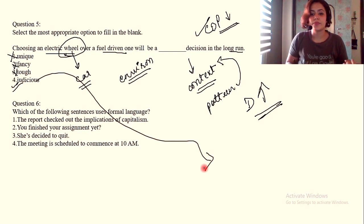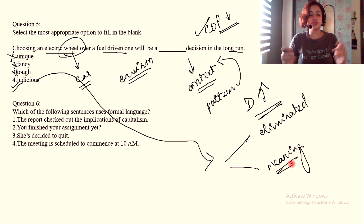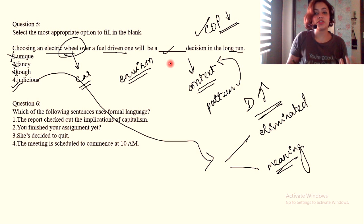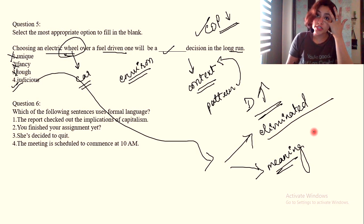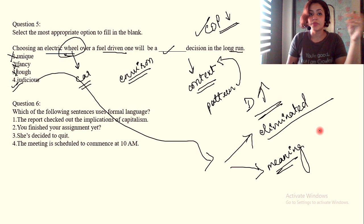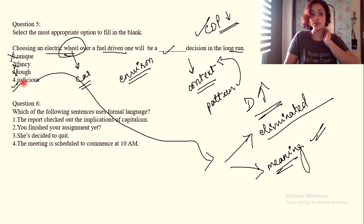It will be a judicious one. To get the answer, you could either eliminate using context like I just did, or just know the meaning. Judicious means to use it very carefully in a sustainable manner. So two methods: if you don't know the meaning of words, use context; if you do know the meaning, eliminate the rest based on why this one is most apt.